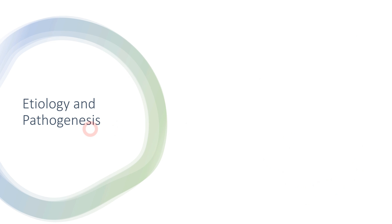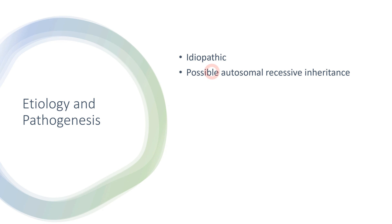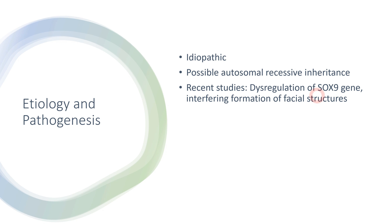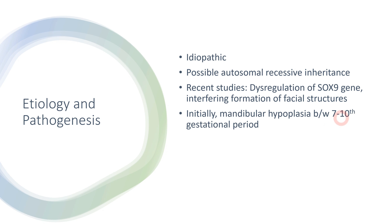Talking about the etiology and pathogenesis of Peyer-Robin syndrome: firstly, this is an idiopathic condition — there is no direct causative agent. However, it is known to be an autosomal recessive disorder, and studies have concluded that there is some dysregulation of the SOX9 gene, which interferes in facial structure formation, suggesting this gene may be responsible for causing Peyer-Robin syndrome. During the 7th to 10th gestational period, there is interference in mandibular formation leading to mandibular hypoplasia, responsible for one characteristic feature of the syndrome.